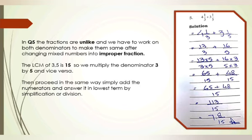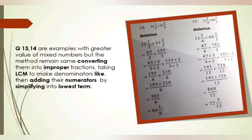113/15 cannot be simplified by cutting, so we divide it directly. 15 goes into 113 seven times (15 × 7 = 105), with a remainder of 8. So the answer expressed as a mixed number is 7 and 8/15. For the book questions 13 and 14, which involve larger whole numbers like 32, 51, 11, and 60, you follow the exact same method.